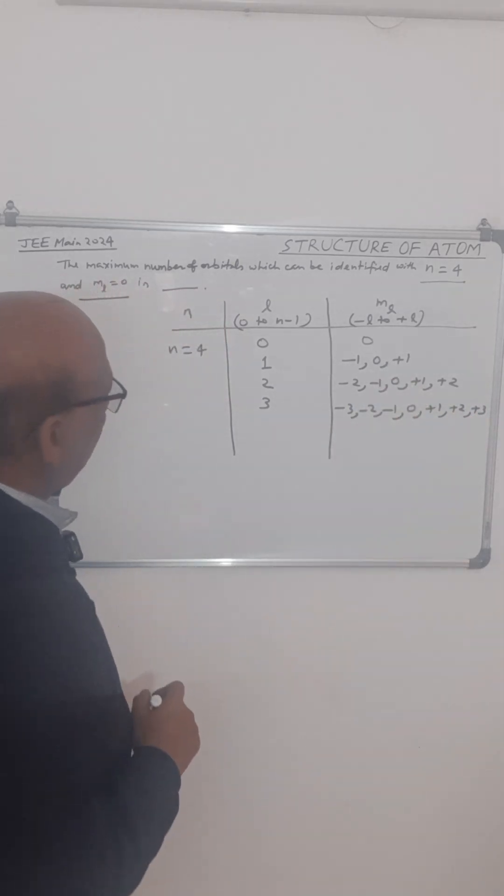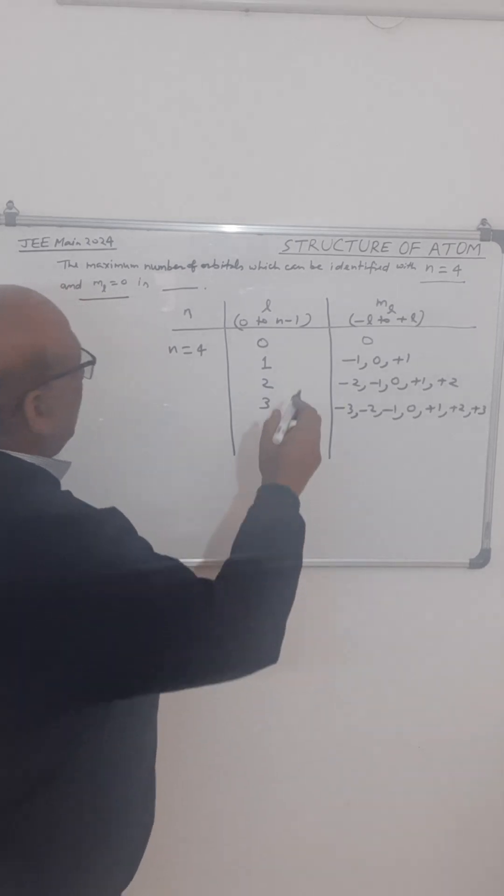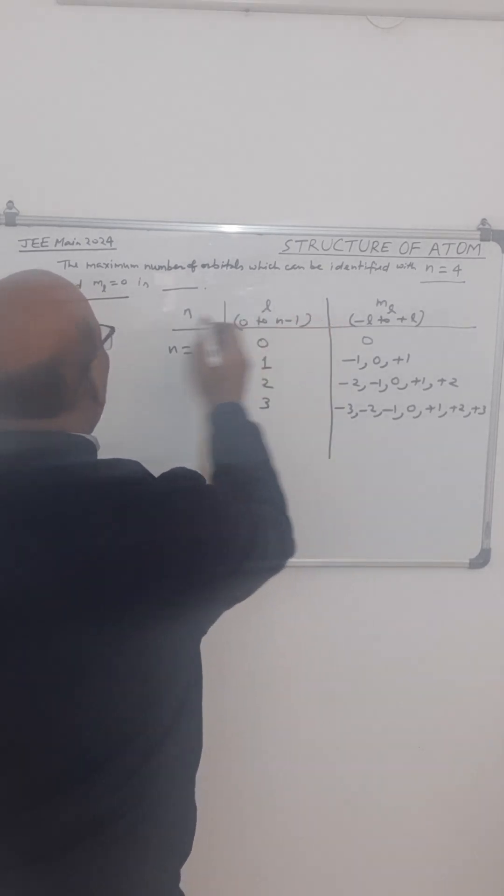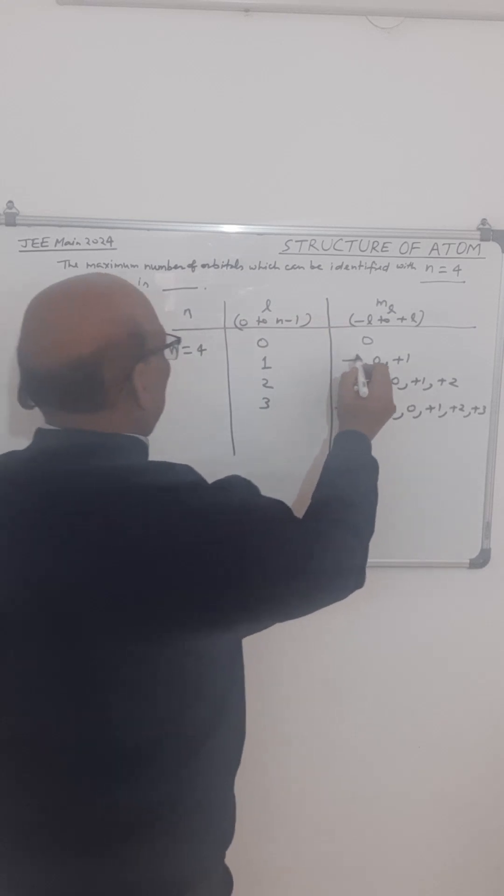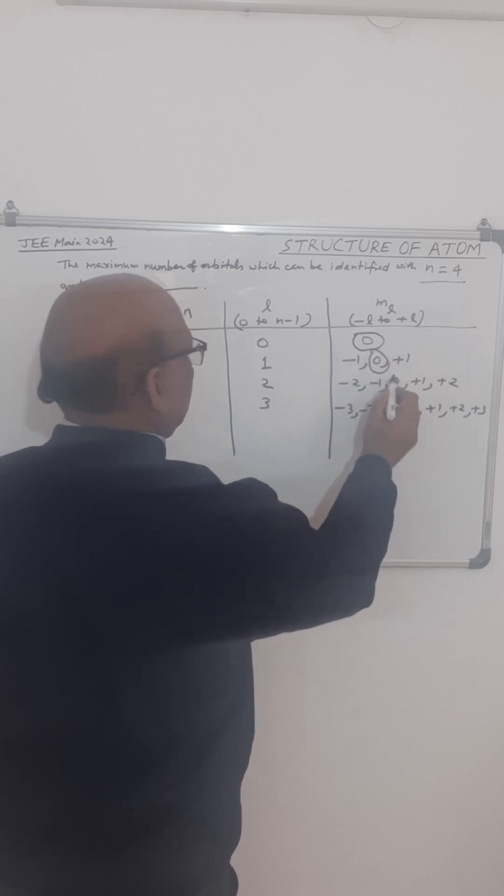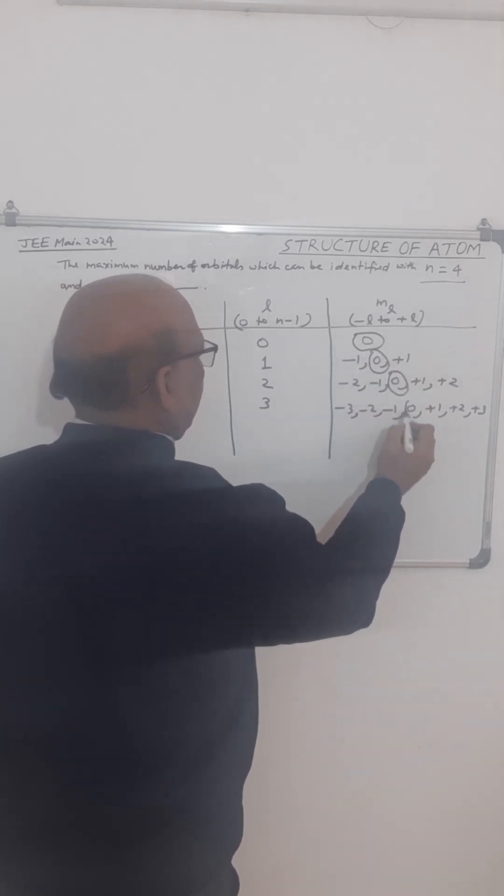These are the possible values of ml. Now, we have to identify the orbitals for which ml equal to 0. ml equal to 0 is for this orbital, then this, then this, and then this.